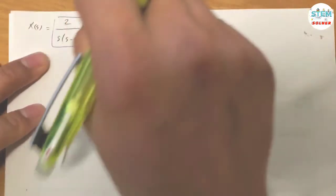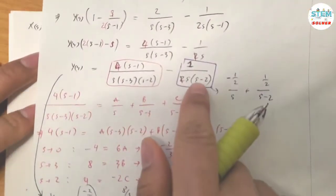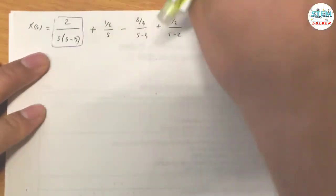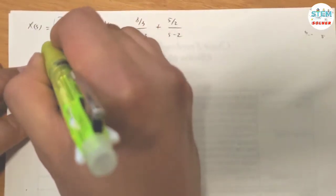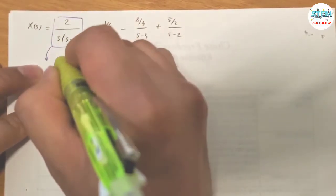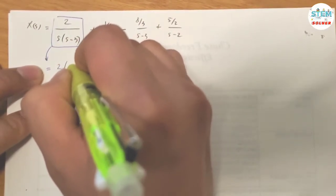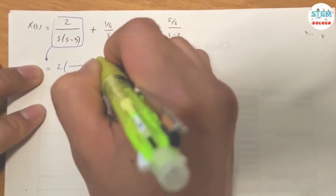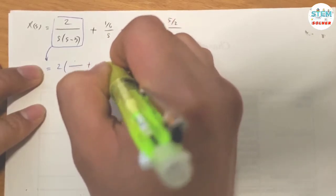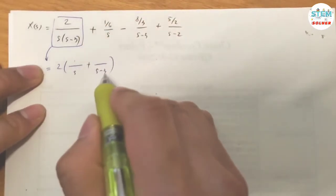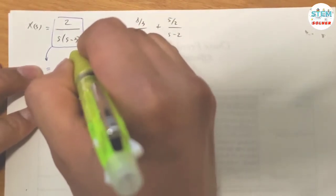Using the same shortcut method for the partial fractions of two over S(S minus 3): we write something over S plus something over (S minus 3). They are off by three, so we have one-third on top.